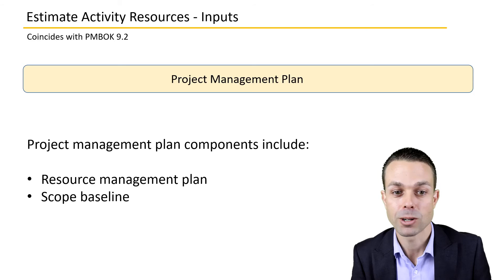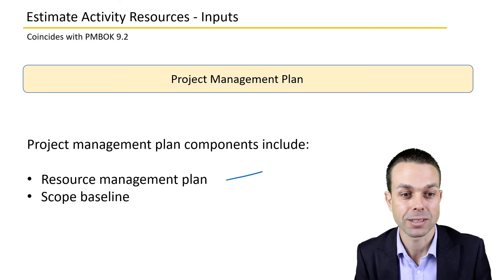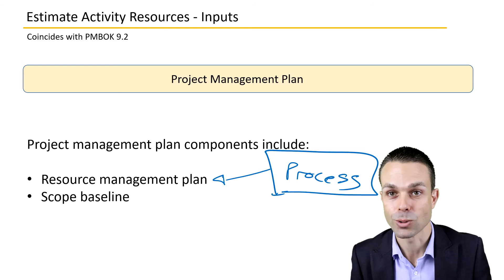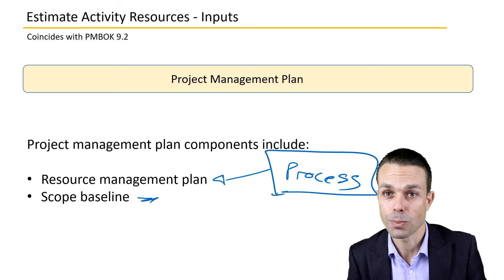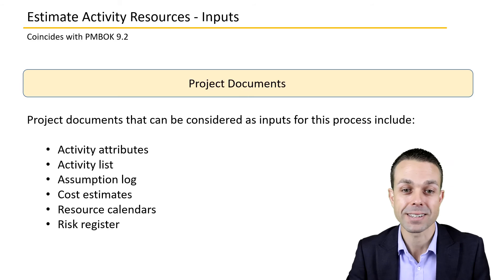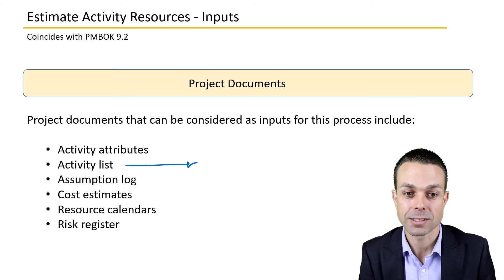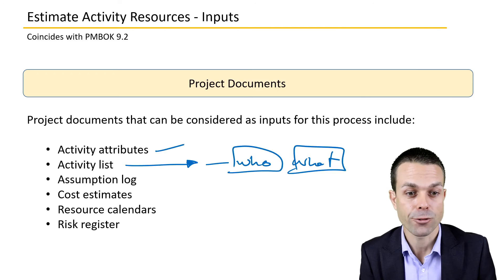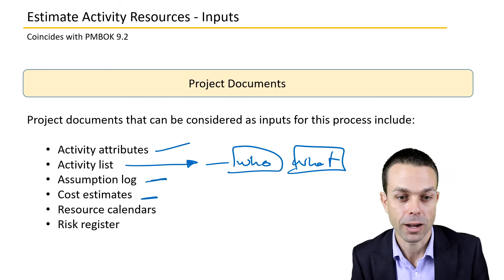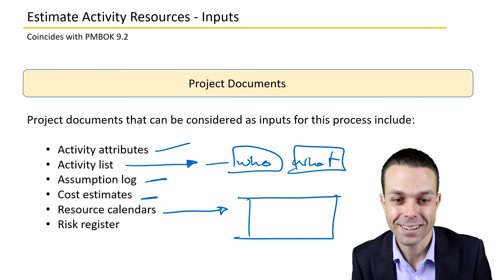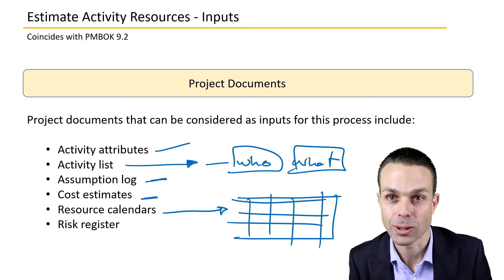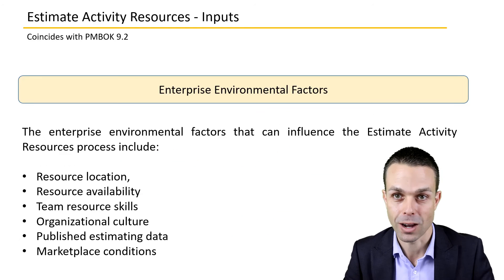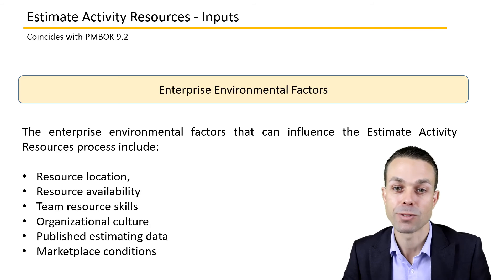Key inputs for estimate activity resources include the project management plan — most commonly the resource management plan, which describes how we gather, manage, and control agreed-upon resources — and the scope baseline, so we know what we're delivering. Project documents used as inputs include the activity list, activity attributes, the assumptions log, any cost estimates made so far, resource calendars showing who is available and when, and the risk register for any raised or emerging risks.